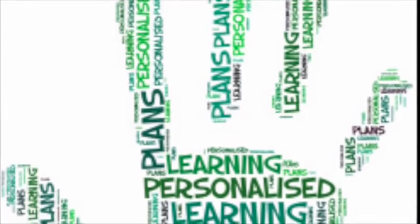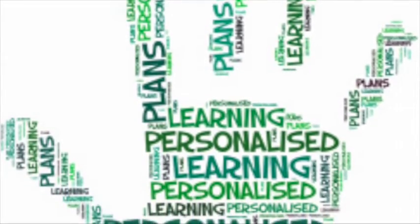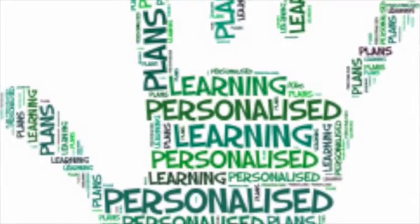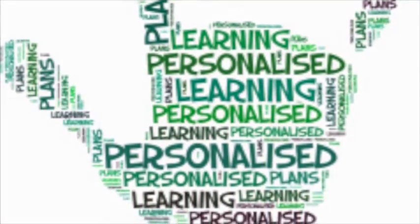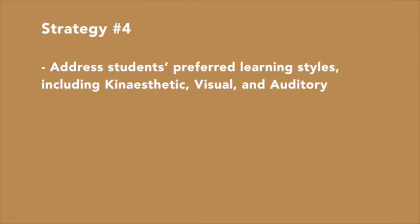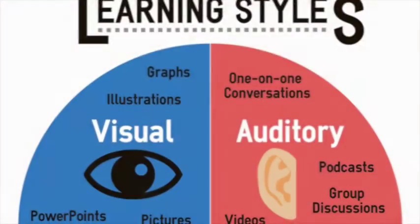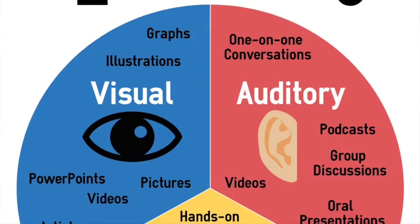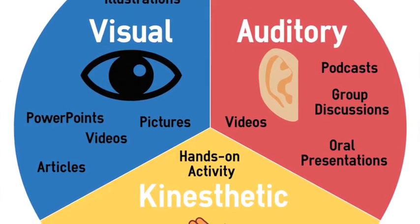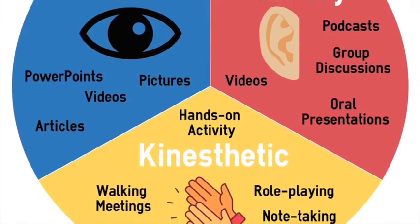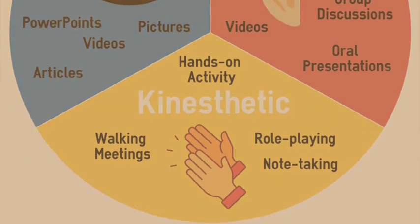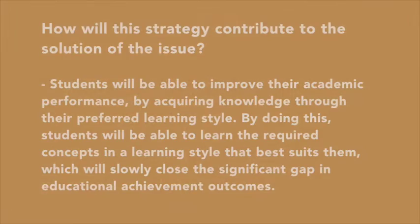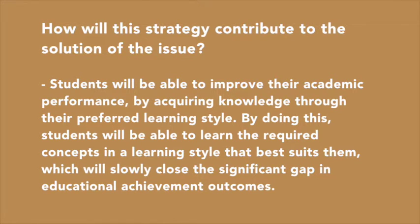The fourth strategy I have adopted is to address students' preferred learning styles — kinesthetic, visual and auditory. For kinesthetic learners, lessons can be based around cultural dances, cultural artefacts, local Indigenous role plays, stories and experiments. For visual learners, lessons can be taught through cultural videos, cultural books, photos, diagrams and post-its. For auditory learners, lessons can be taught through Indigenous music, songwriting and songs, Indigenous storytelling, podcasts and audiobooks. This strategy will contribute to the solution of the issue as students will be able to improve their academic performance by acquiring knowledge through their preferred learning style, which will slowly close the significant gap in educational achievement outcomes.